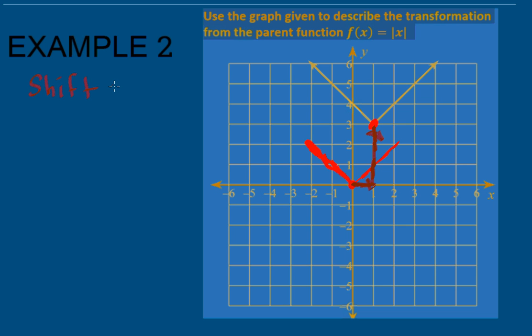Shift right 1, that's the horizontal transformation. And shift up 3 is the vertical transformation. And those are the only transformations because if we look,